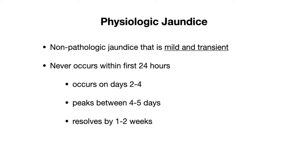The first thing to know is that physiologic jaundice never occurs within the first 24 hours — that is a sign of pathologic jaundice if it does. Physiologic jaundice typically occurs on days 2 to 4, peaks within 4 to 5 days, and resolves by 1 to 2 weeks.